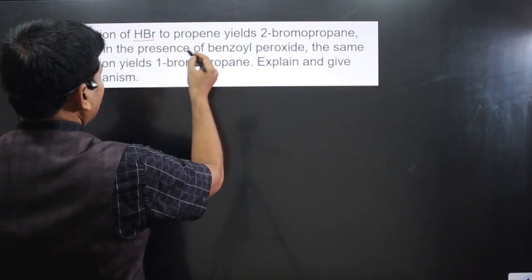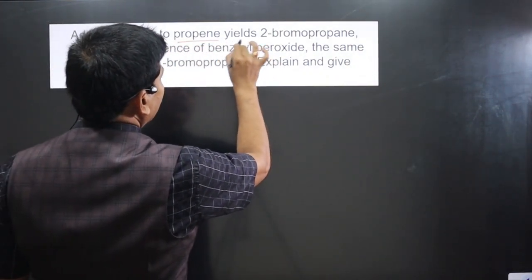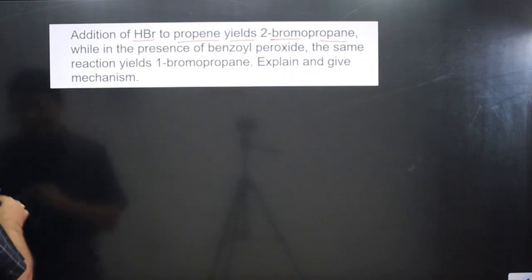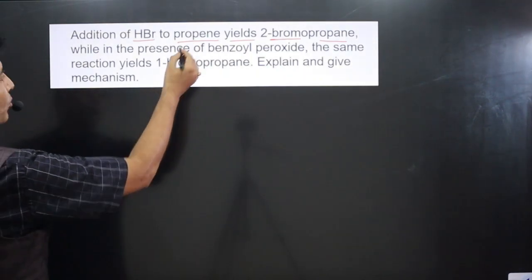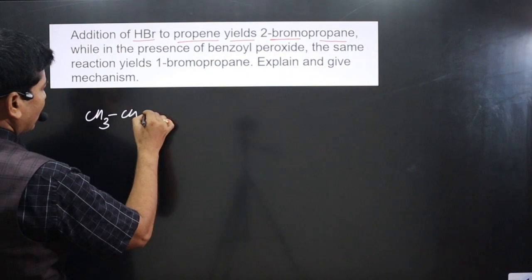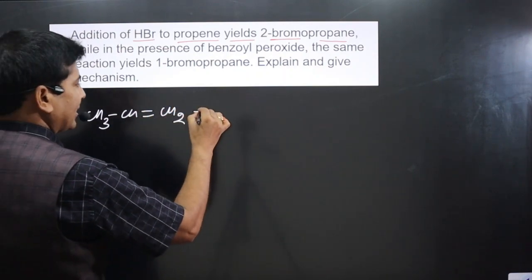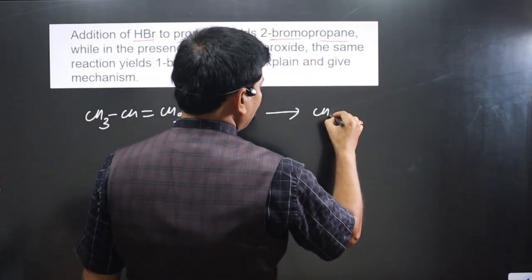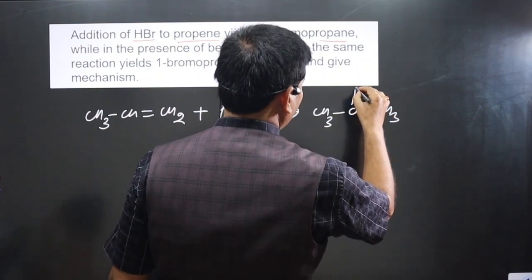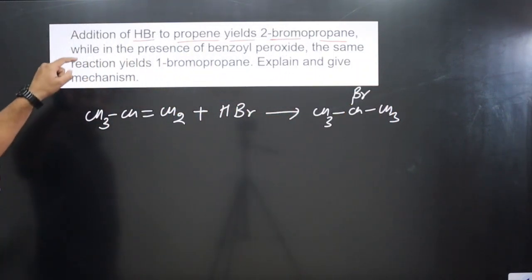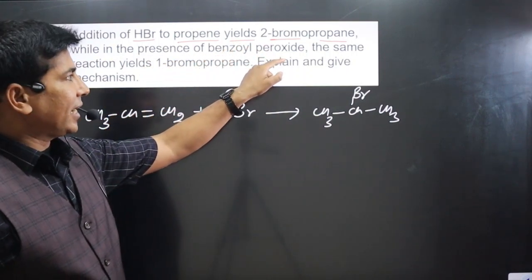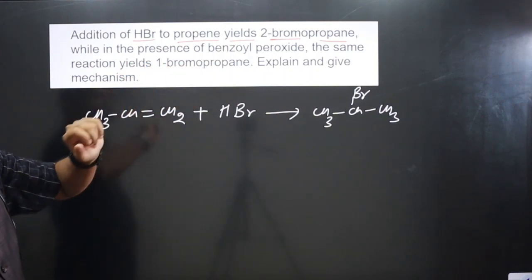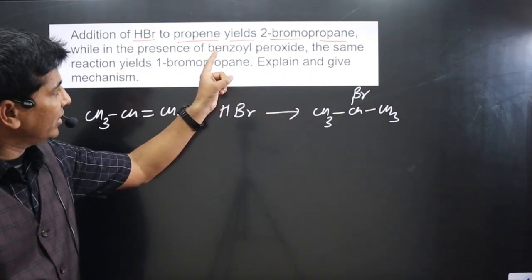The question is: addition of HBr to propene yields 2-bromopropane. We can write this chemical reaction — we have propene CH3-CH=CH2 reacting with HBr and forming the product 2-bromopropane, CH3-CHBr-CH3. Further, it says that in the presence of benzoyl peroxide, the same chemical reaction yields 1-bromopropane.